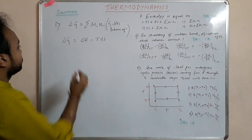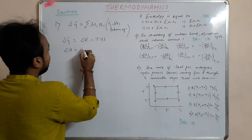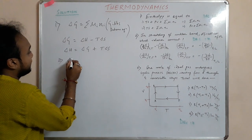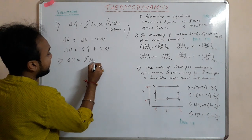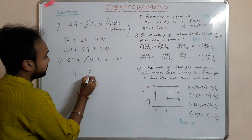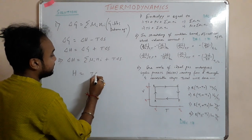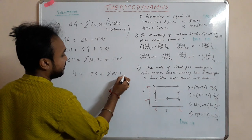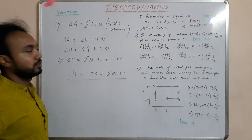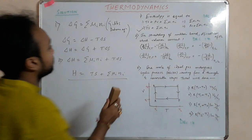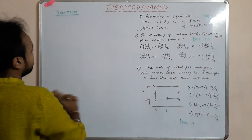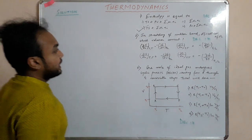So delta H = delta G + T delta S, which gives delta H = Σ μᵢnᵢ + T delta S. Therefore, enthalpy is basically TS + Σ μᵢnᵢ. So option two is the correct one. Now let's move to the second problem.